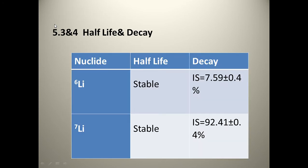The half-life and the decay of these isotopes: the first one, Li-6, its half-life is stable and its decay is equal to 7.59%. The second, Li-7, its half-life is stable and its decay is 92.41%.